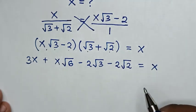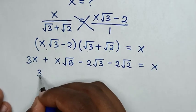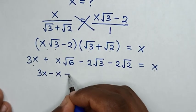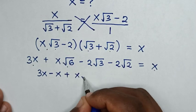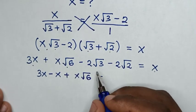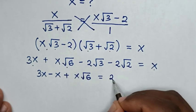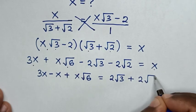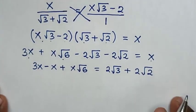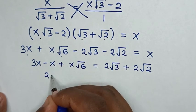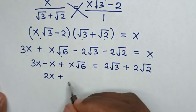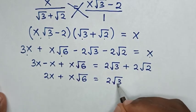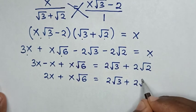Then in the next step, we take x to the left side. So it will be 3x minus x plus x square root of 6. This is equal to — taking the other terms to the right side — 2 square root of 3 plus 2 square root of 2. So: 2x plus x square root of 6 is equal to 2 square root of 3 plus 2 square root of 2.